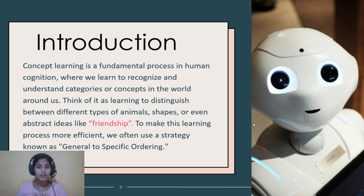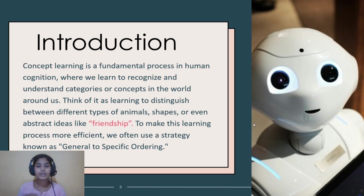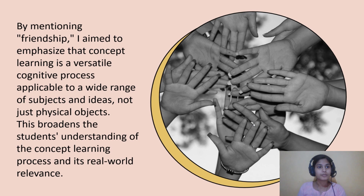The machine learning model is going to learn how to distinguish between different types of animals, shapes, or even ideas like friendship, which are not real-world objects. By mentioning friendship, I aim to emphasize that concept learning is a versatile cognitive process applicable to a wide range of subjects and ideas, not just physical objects.